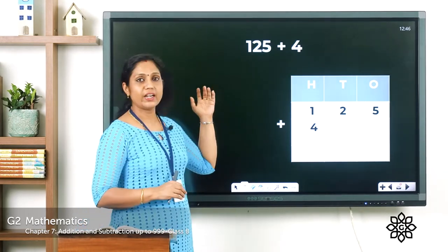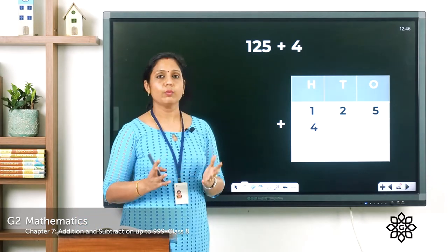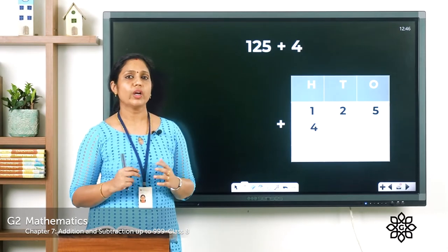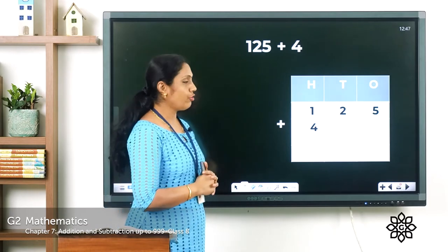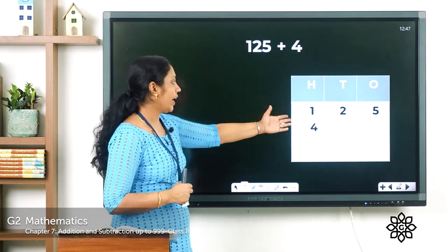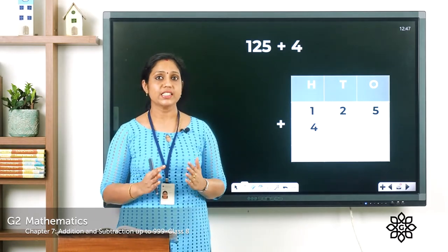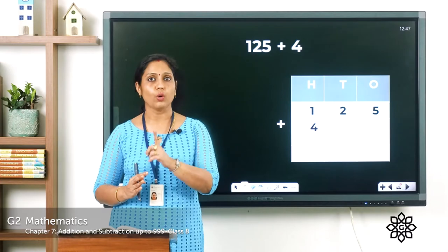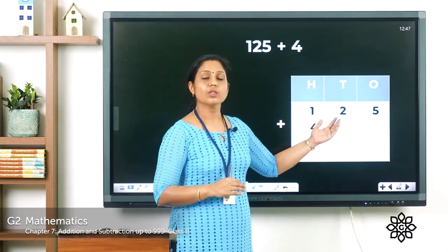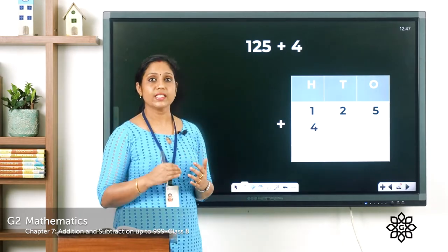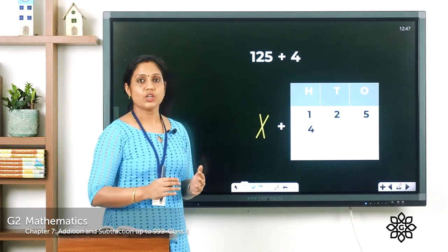The number 125 is a three-digit number and the next number is 4. What about 4? 4 is a one-digit number. So how can we write this? We have to add 125 plus 4. If we write 4 in the hundreds place, there is only one digit, which means there are only four ones. So where should we place 4 — in the hundreds place, tens place, or ones place?